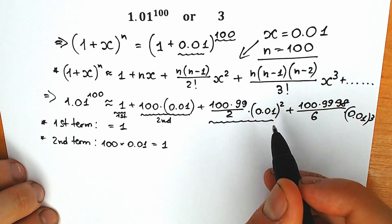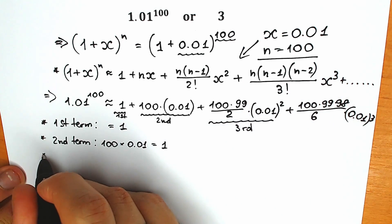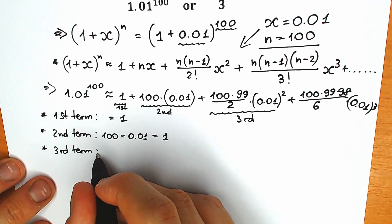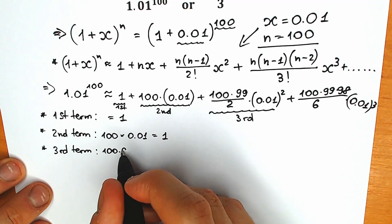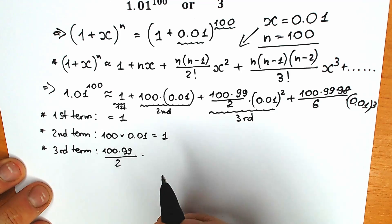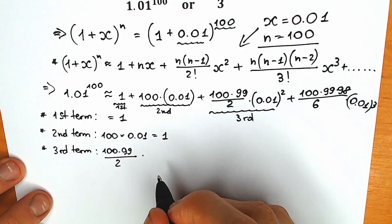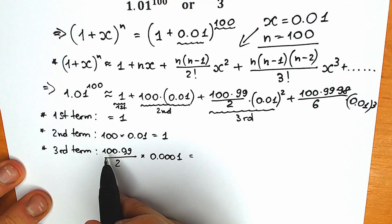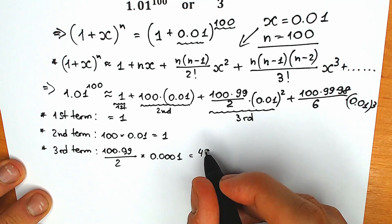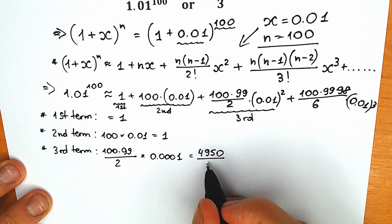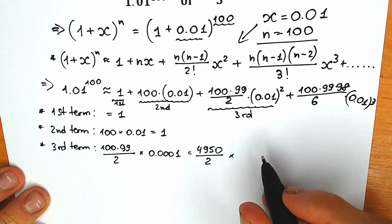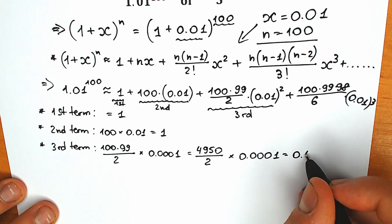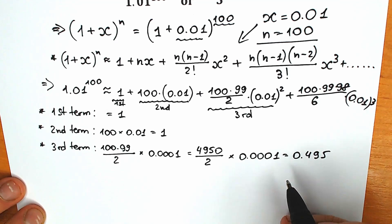The third term is (100 times 99)/2 times (0.01) squared. Since 0.01 squared equals 0.0001, we have 4950 divided by 2, times 0.0001, which gives us 0.495. This is our third term.